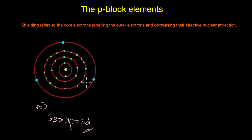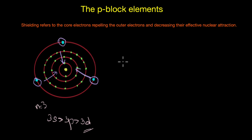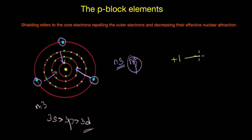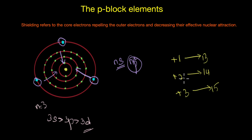Because of the poor shielding effect, valence electrons experience greater nuclear charge and are pulled more strongly towards the nucleus. It becomes difficult for them to participate in chemical bonding — especially the ns electrons, since they are closest to the nucleus. This reluctance of the ns electrons to participate in bonding is what we refer to as the inert pair effect. As a result, only the np electrons become available for bonding.